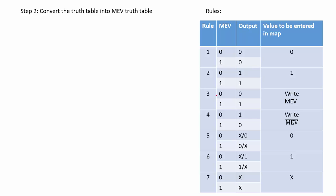Rule 3 is: when the map entered variable is 0, output is 0, and when the map entered variable is 1, output is 1. So the output follows the map entered variable, and the value that must be entered in the map will be the map entered variable itself. Rule 4 is: when the map entered variable is 0, output is 1, and when the map entered variable is 1, output is 0.